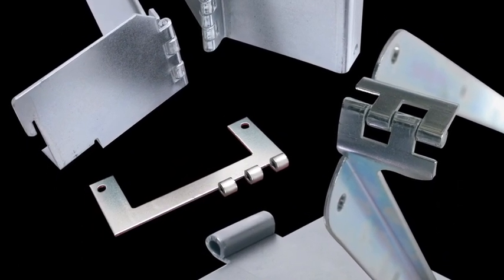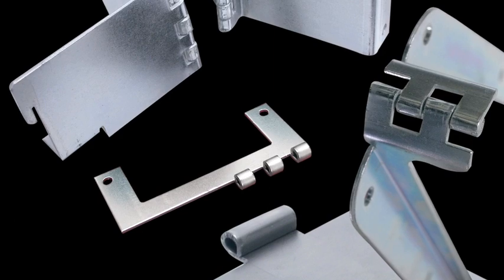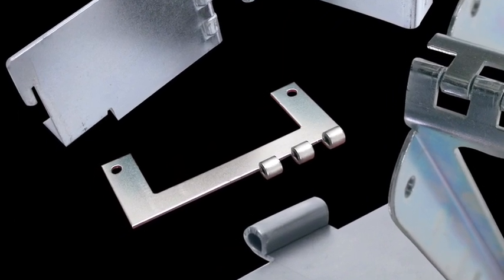Forming hinges in a punch press ensures accuracy over secondary operations and can also eliminate the cost of specialized press brake or stamping tooling to create hinge forms in a secondary operation.